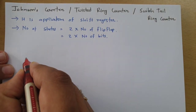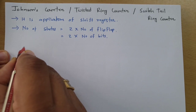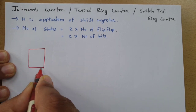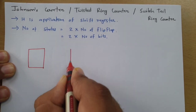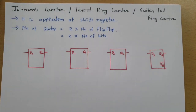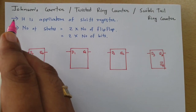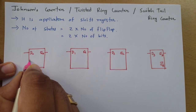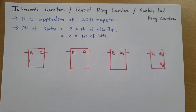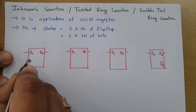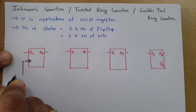For the design, I will consider a 4-bit shift register, which I will construct using D flip-flops. Let me draw 4 D flip-flops first. With these 4 D flip-flops we have our shift register. Note that Johnson counter is a synchronous counter, so we will have a clock common to all flip-flops.